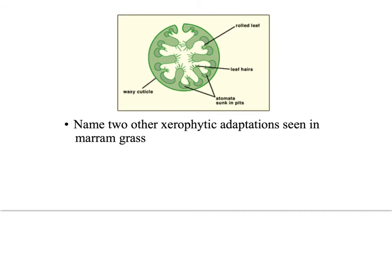There are two other xerophytic adaptations in marram grass. The first is a very thick, waxy cuticle — remember in an exam you must say 'thick, waxy cuticle' for a xerophytic adaptation — which reduces evaporation from the surface of the leaf. Another adaptation is hairs around the grooves inside the leaf, which again trap water vapour, preventing loss of water by evaporation.